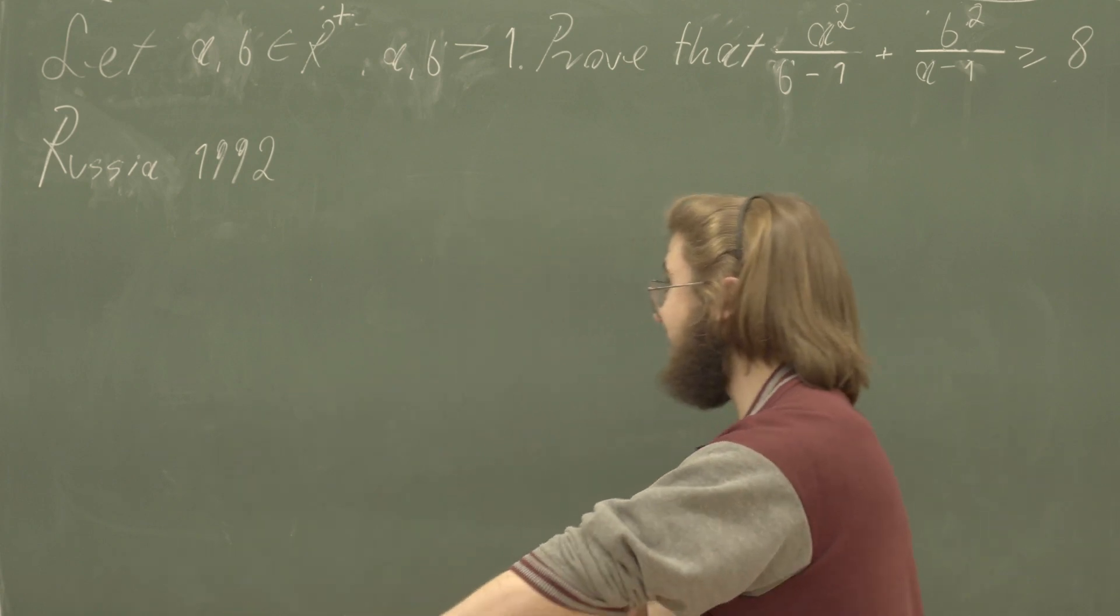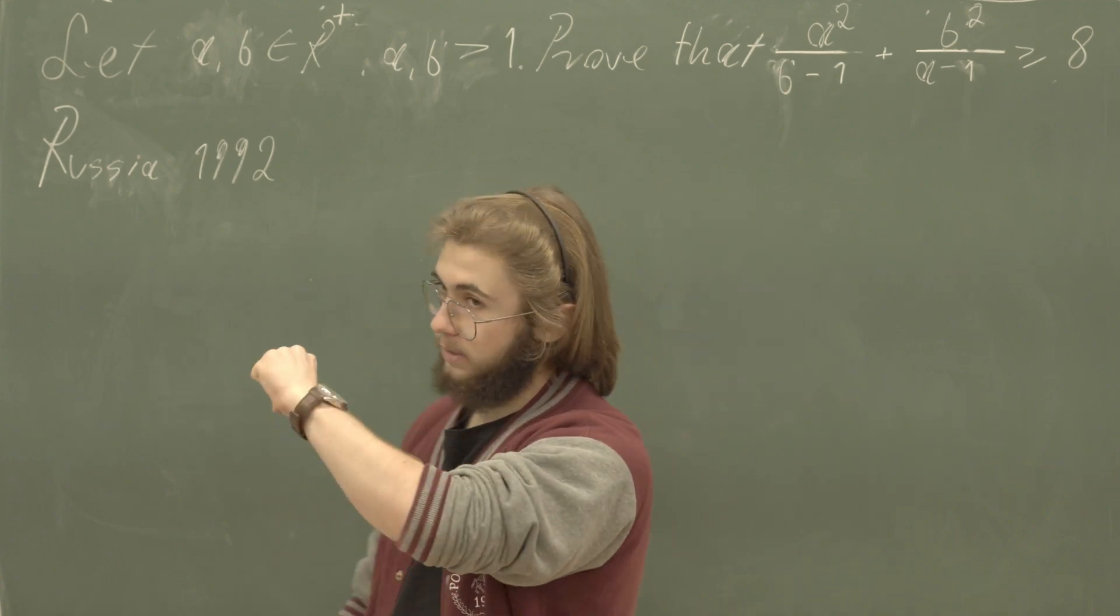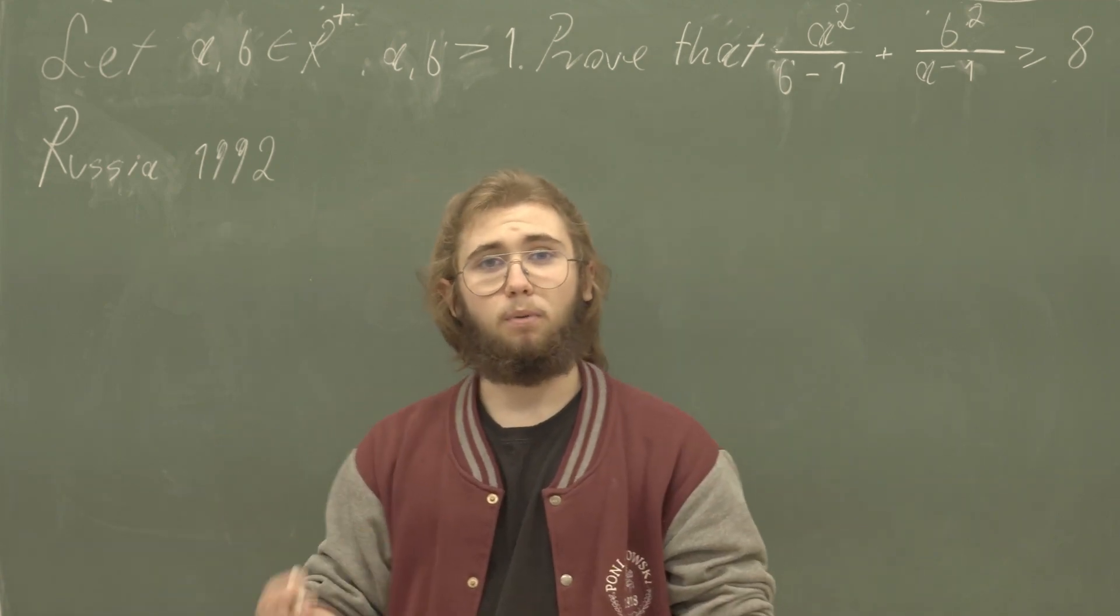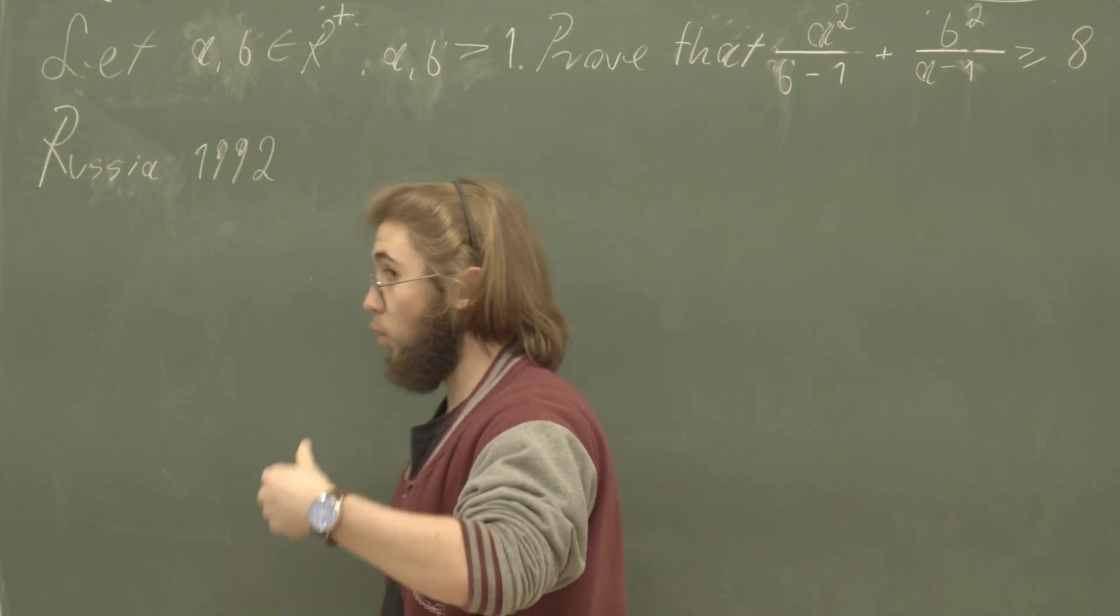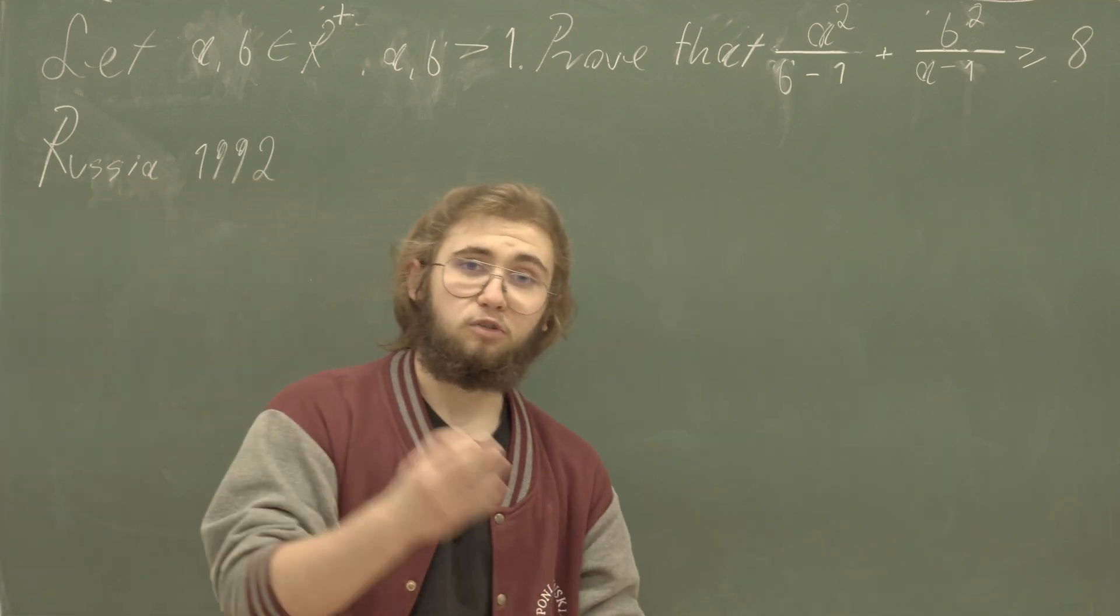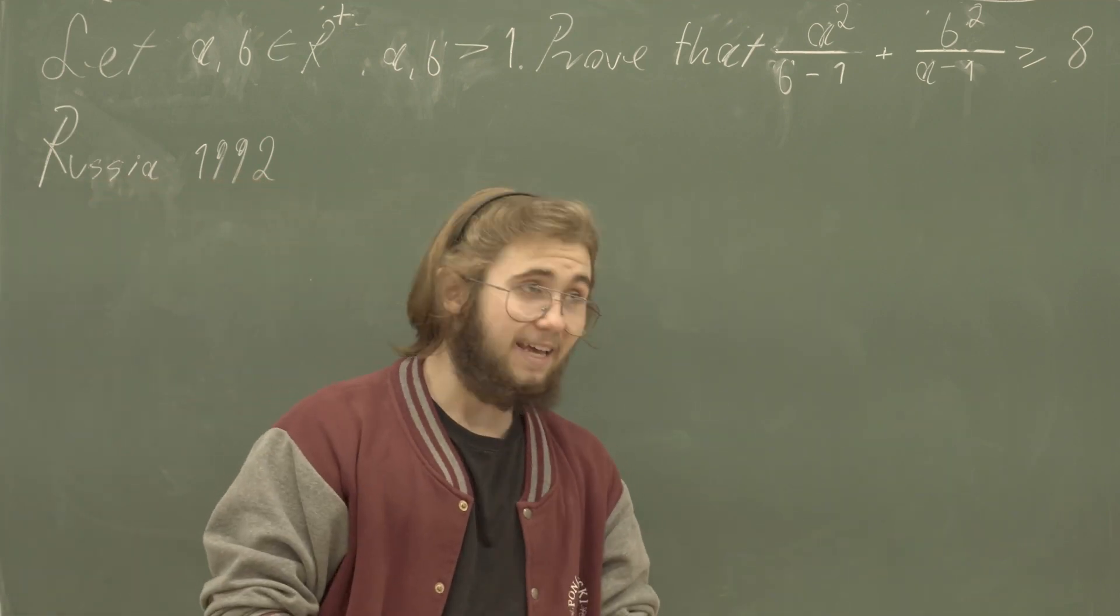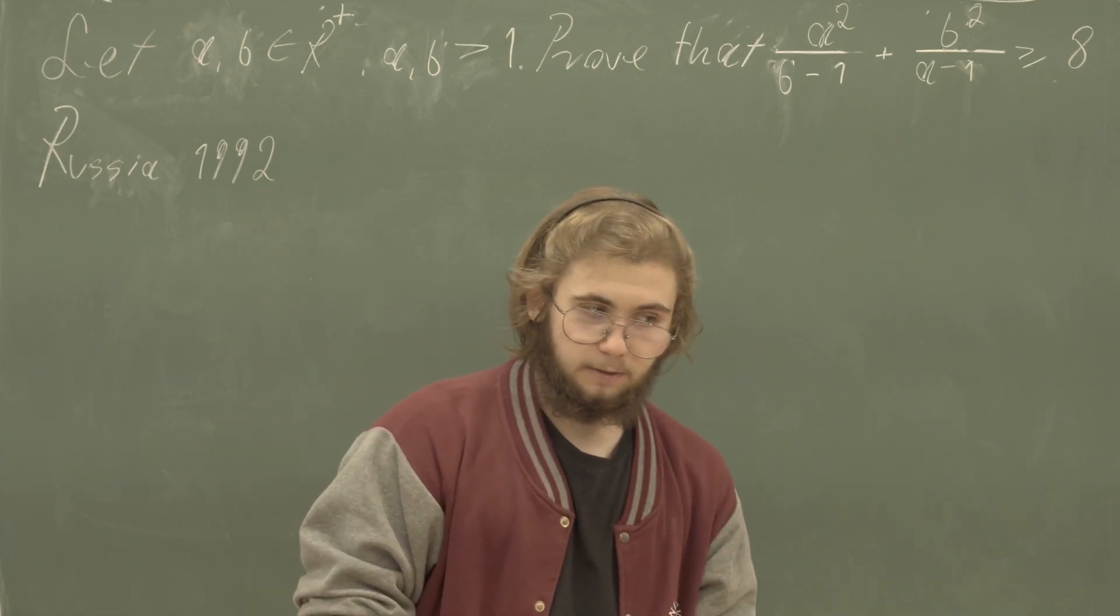And now, ladies and gentlemen, Russia 1992. I'm going to link that—it's a beautiful problem right there. So a and b are both positive real numbers, both strictly greater than one, and what we're supposed to do is prove that a squared over (b minus one) plus b squared over (a minus one) is always greater than or equal to eight.